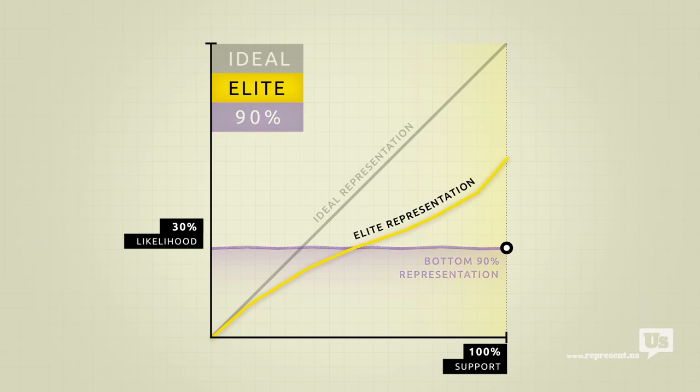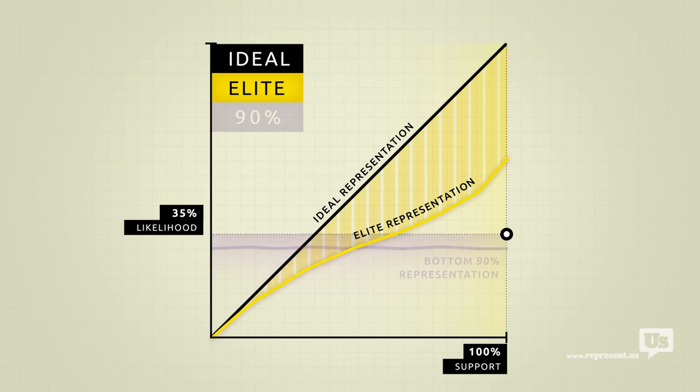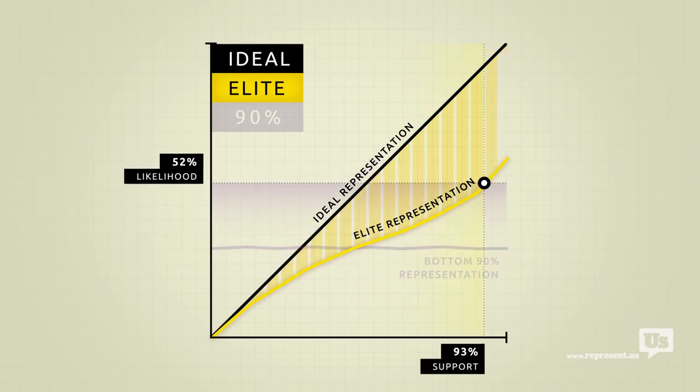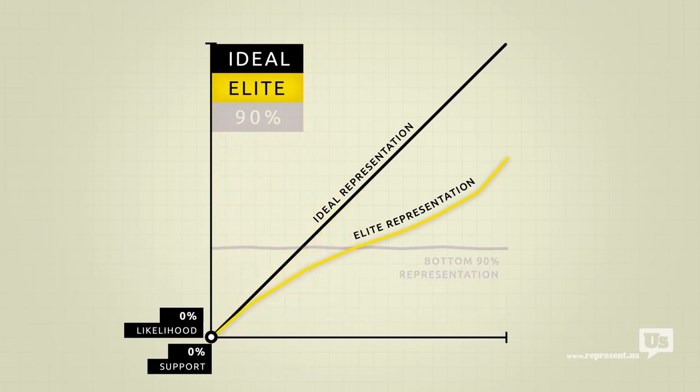Look at how much closer their line is to the ideal. When they want something, the government is much more likely to do it. And when they don't, they have the power to completely block it from happening, no matter how much the rest of the country supports it. They get what they want, and guess who ends up paying for it?